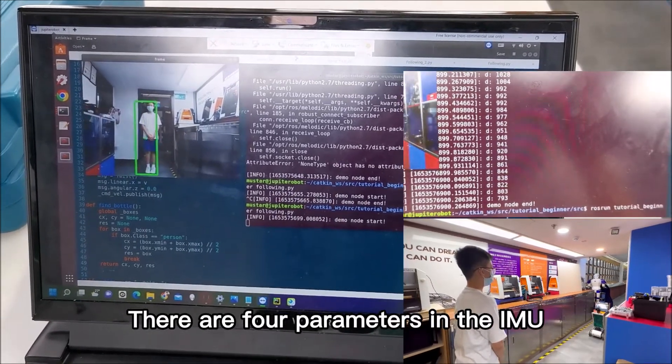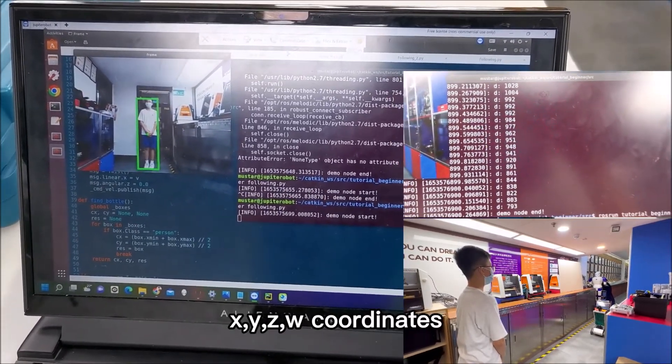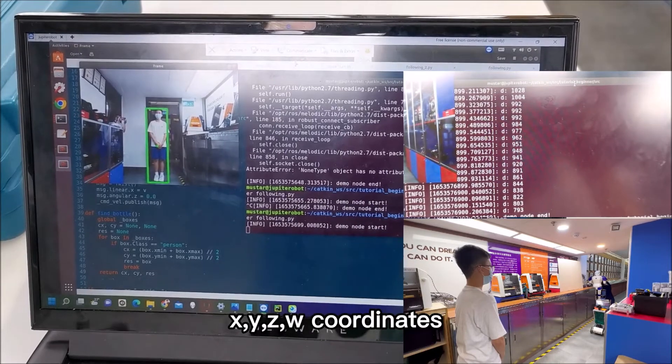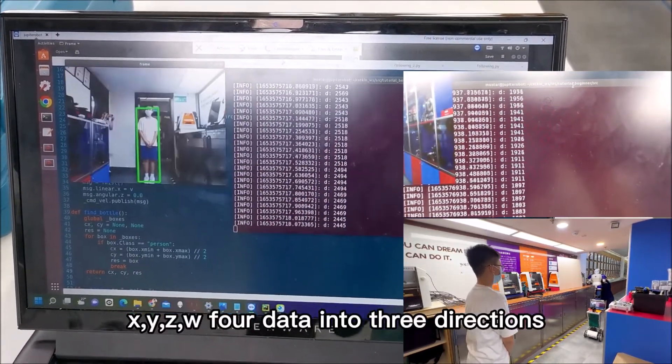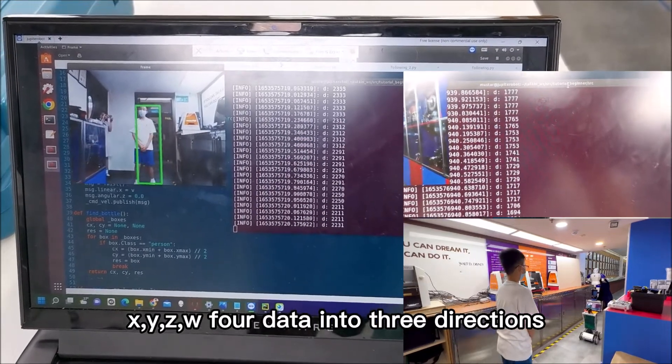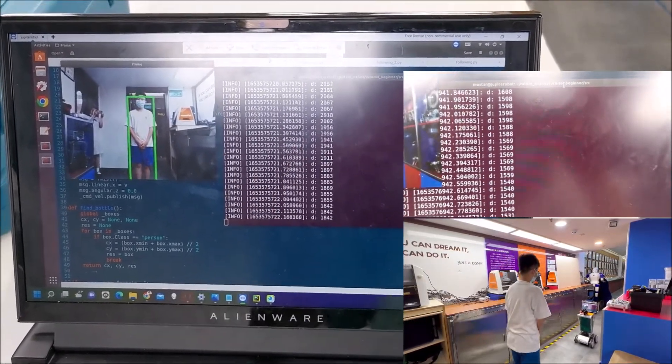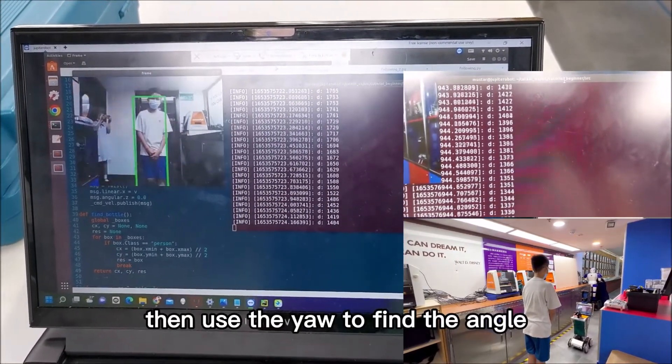There are four parameters in the IMU: X, Y, Z, W coordinates. X, Y, Z, W hold data into three directions. Then use the yaw to find the angle.